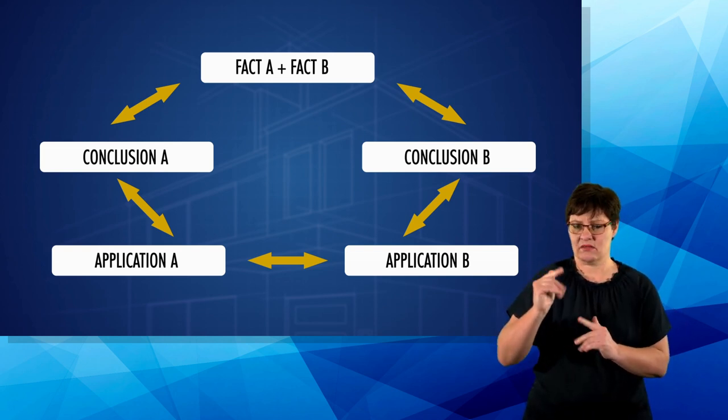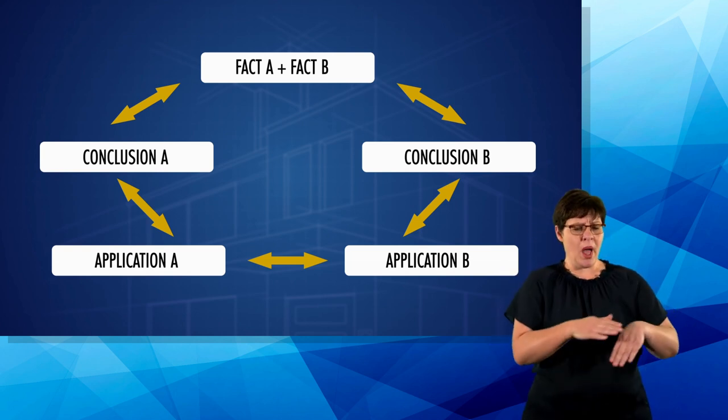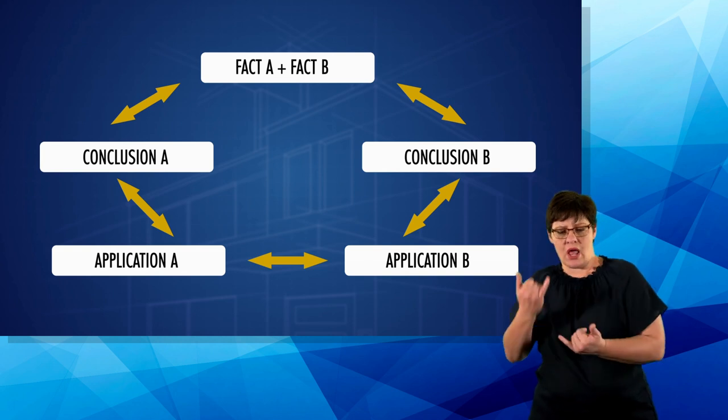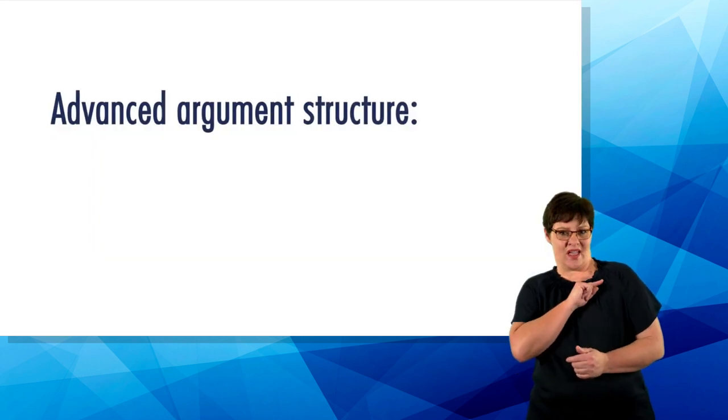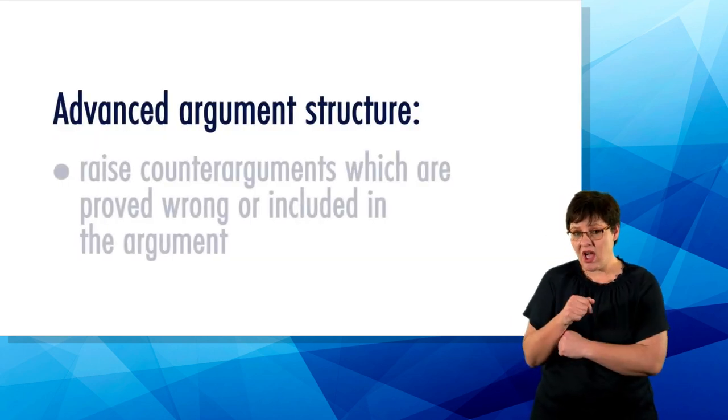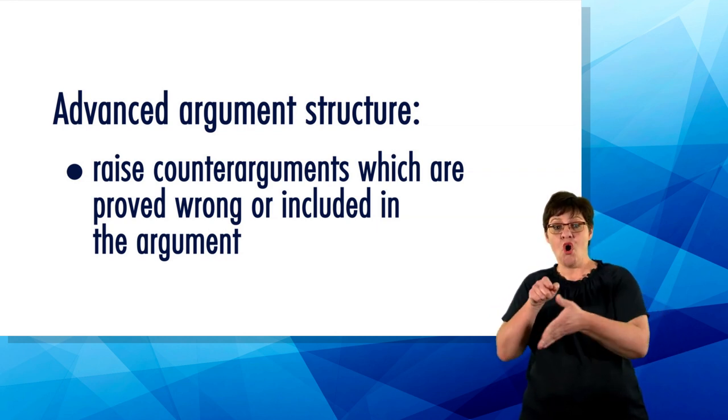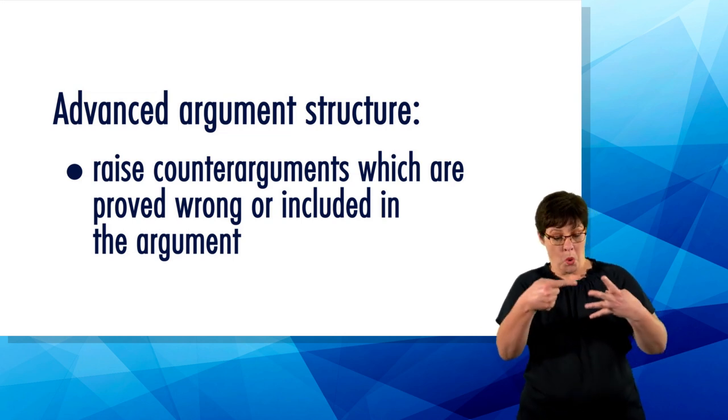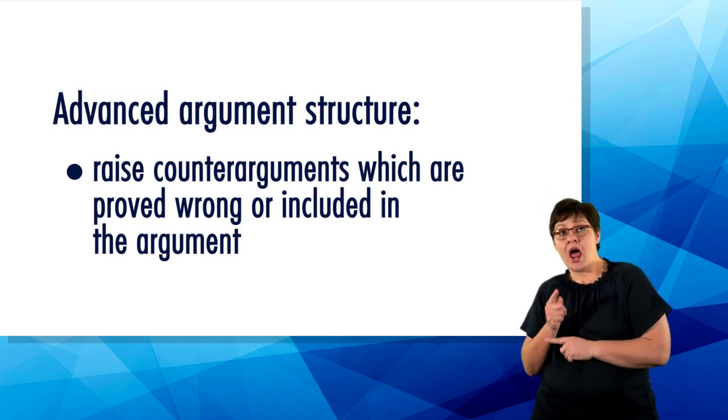In the advanced argument the logical flow follows the same pattern as in the basic argument, but the writer foresees that somebody may have a possible counter-argument. Therefore in the advanced argument structure possible counter-arguments are raised and the writer deals with them by proving them wrong or by admitting that they have some validity and then slightly adjusting the conclusion or implication proposed in the beginning.